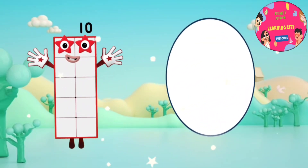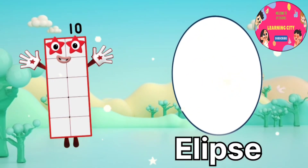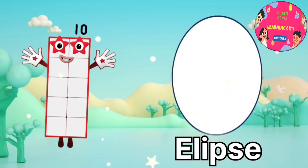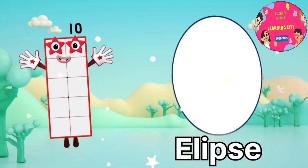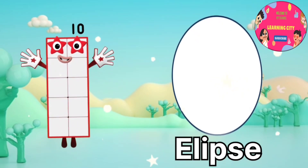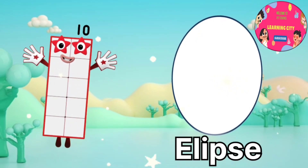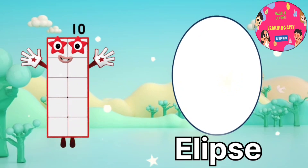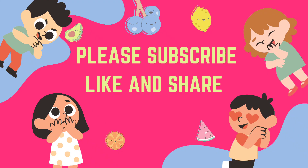I am number block 10. And this is ellipse shape. This is not an egg, but its shape name is ellipse. One more video on Learning City. Please subscribe to my channel. Bye!